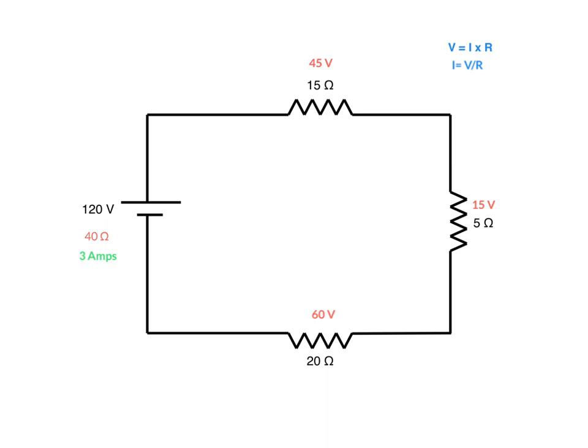3 times 20 gives us 60 volts, 3 times 5 gives us 15 volts, and 3 times 15 gives us 45 volts. There's a way to double-check this: Kirchhoff's law of voltage drops in a series circuit tells us that the sum of these voltages has to equal the total voltage. 60 volts plus 15 volts plus 45 volts equals 120 volts. That is Ohm's law in a nutshell for a series circuit.